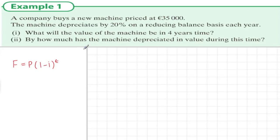Well, the formula is that the future value F equals present value P times (1 minus i) to the power of t.